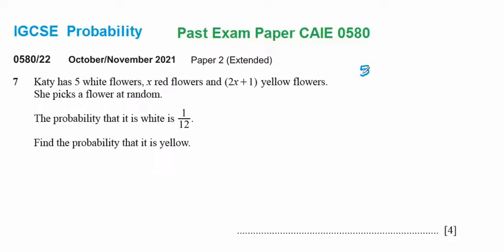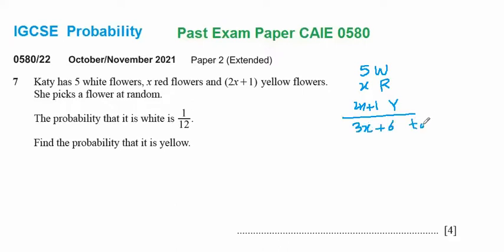There are five white flowers, x red flowers, and 2x plus one yellow flowers. The total will be five plus x plus 2x plus one, which gives three x plus six. This is the total number of flowers. The experiment is that she picks one flower from these three x plus six flowers.